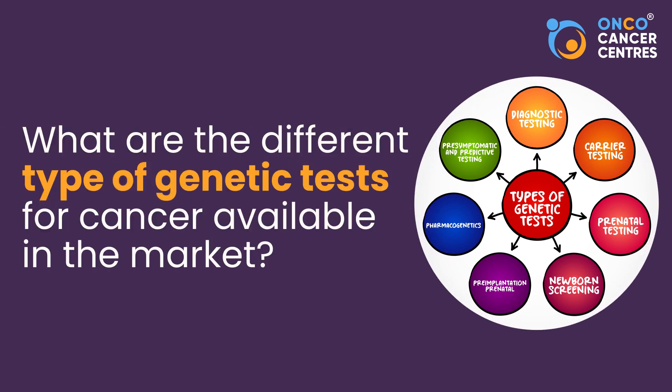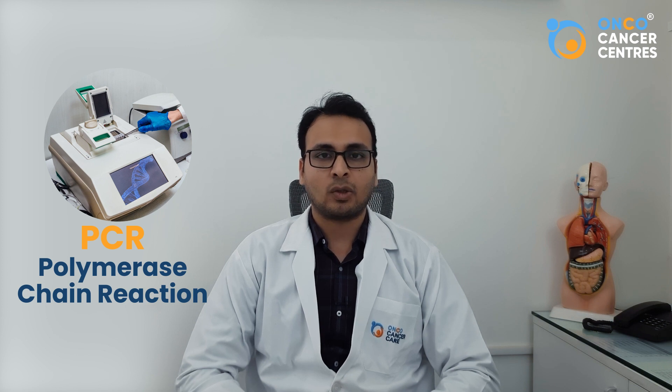What are the different types of genetic testing available in the market? These depend on the type of cancer that we are testing for. For breast cancer and ovarian cancer we have different types of tests available. The techniques we use are NGS (next generation sequencing), PCR (polymerase chain reaction), and the gold standard test is Sanger sequencing. Based on the type of cancer, we use different techniques.